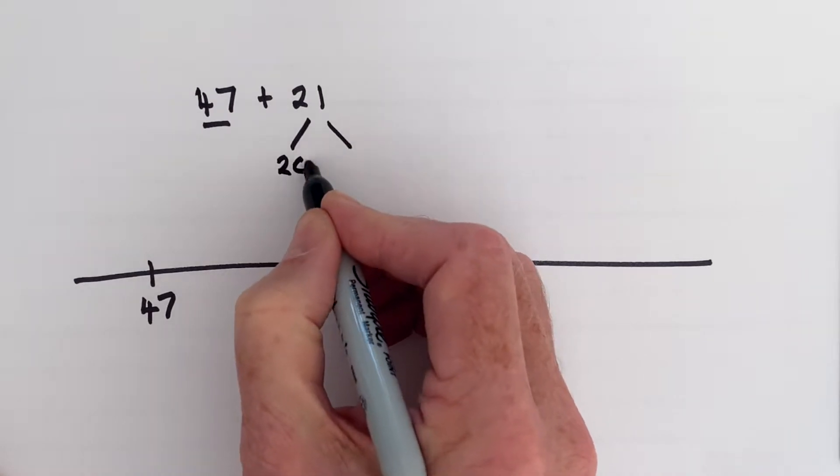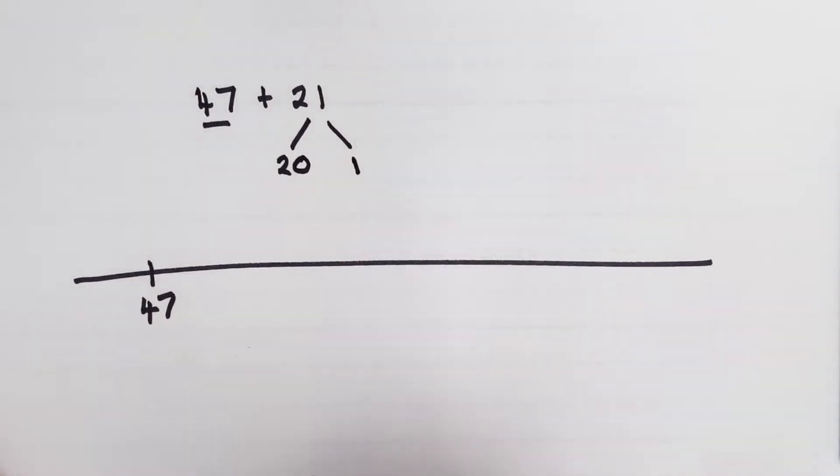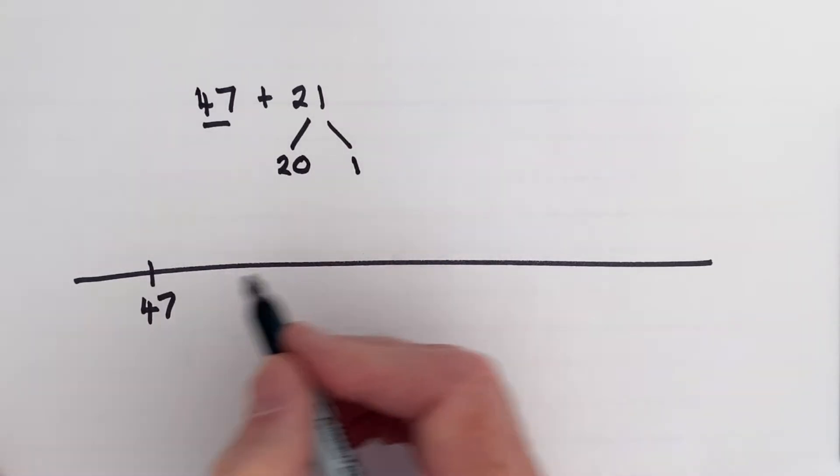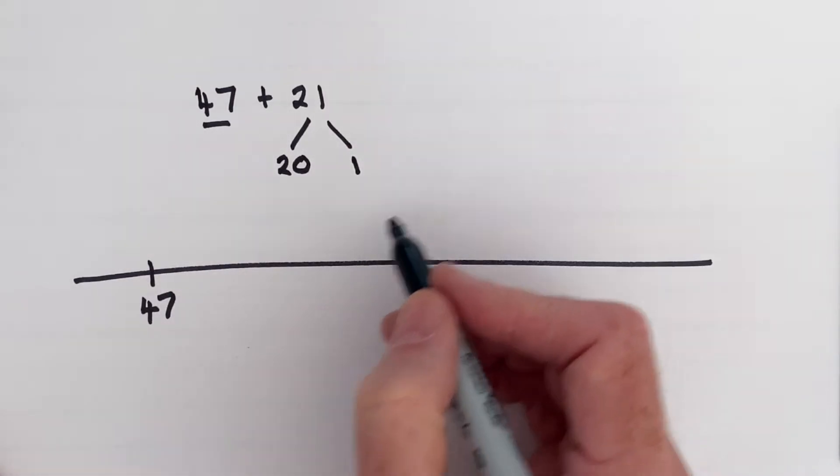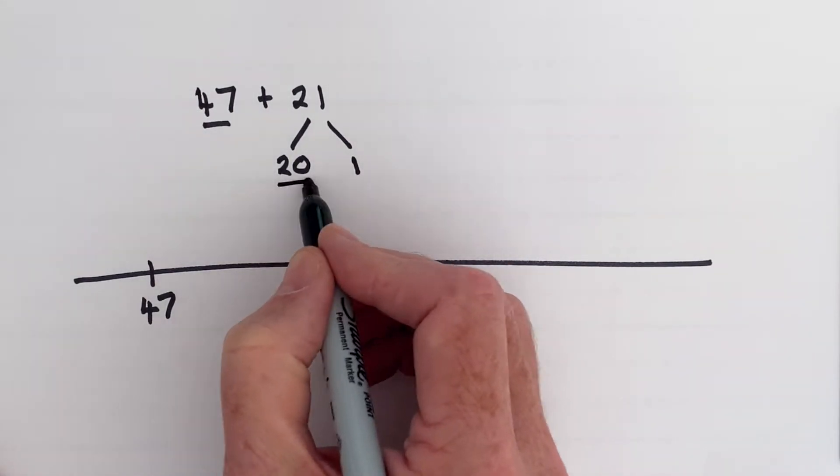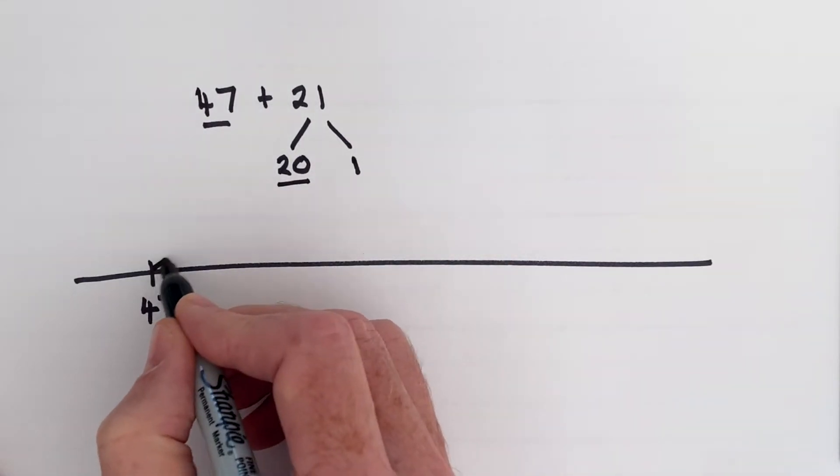21 breaks down into 20 plus 1. Jumping the tens: some children may need to jump 10 to 57 and then 10 again to 67, but if we've been working on counting in 20s, we hope children should be able to go, well, 47 plus 20 is 67.